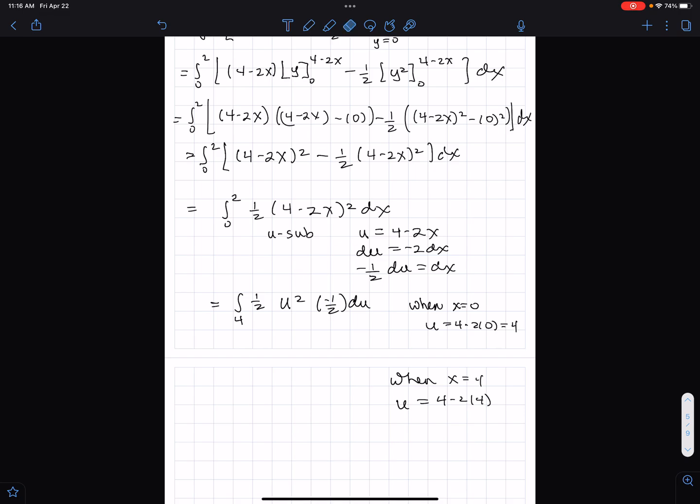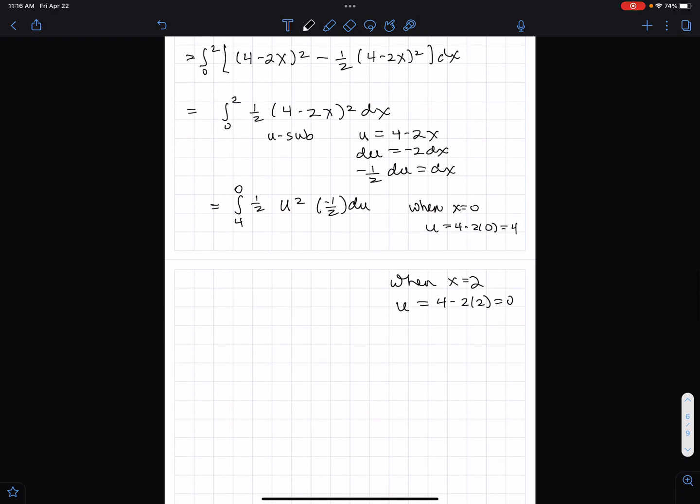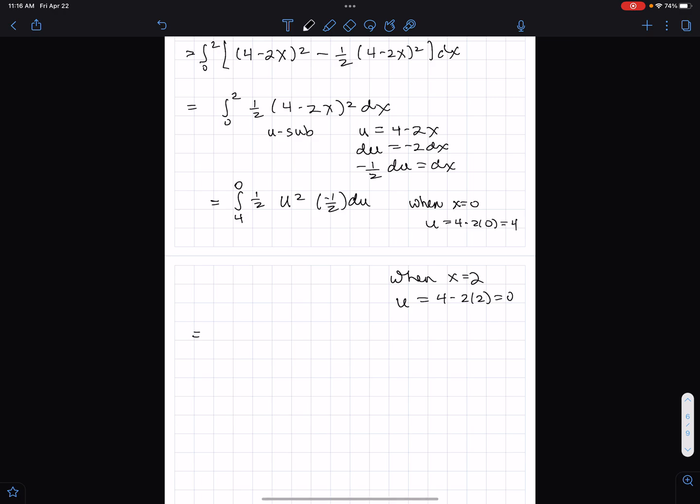Sorry. When x equals 2. When x equals 2, right? So we have x equals 0 and x equals 2. So when x equals 2, we have 4 minus 2 times 2, which equals 0. So this is integral, negative 1 fourth, 4 to 0, u squared du.